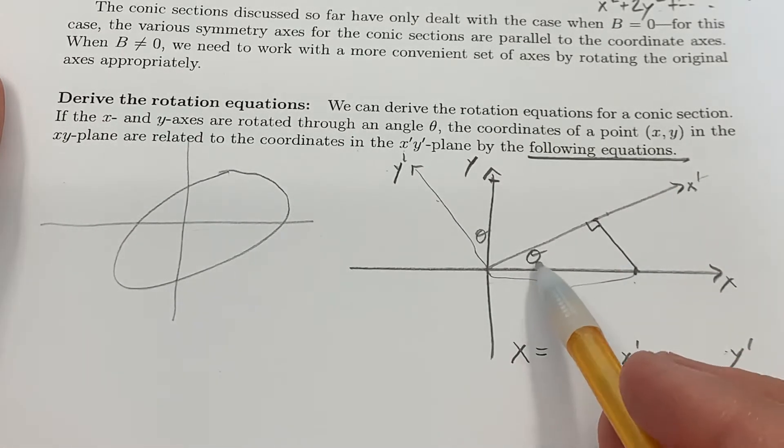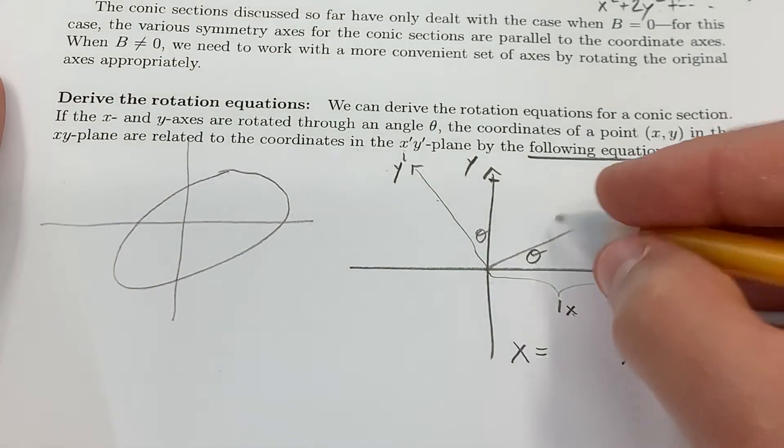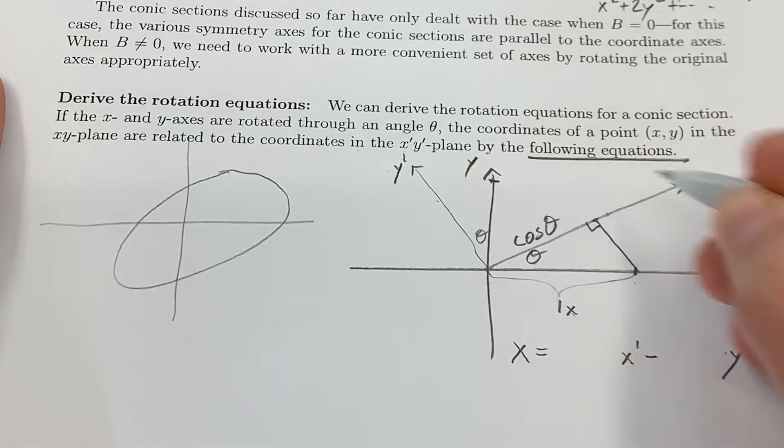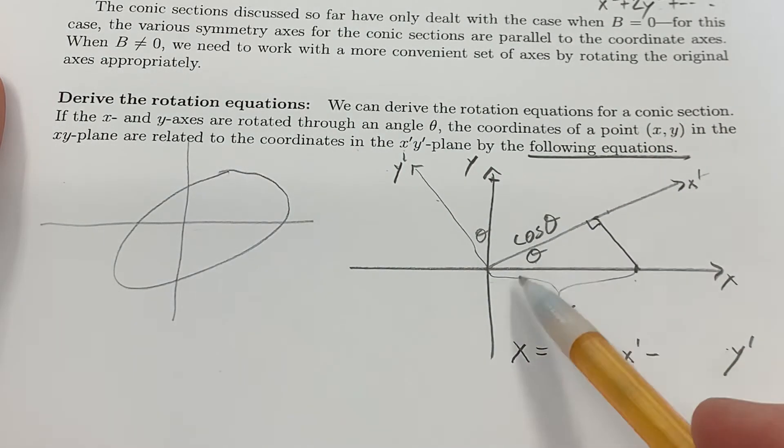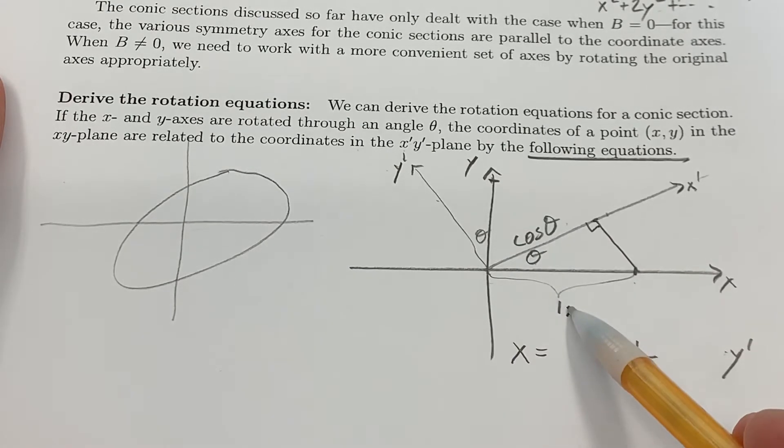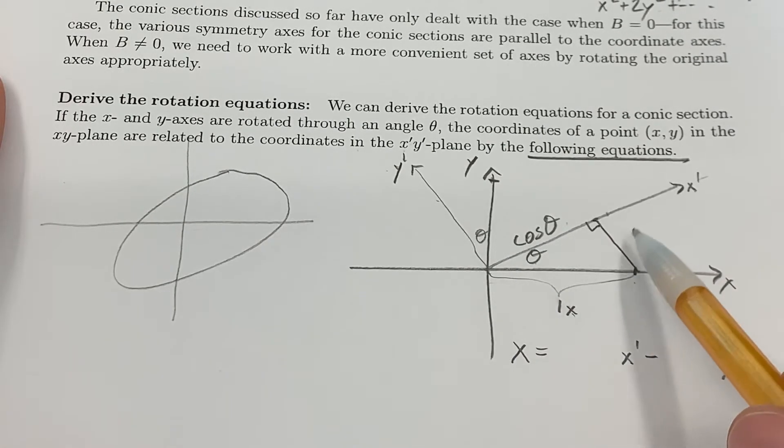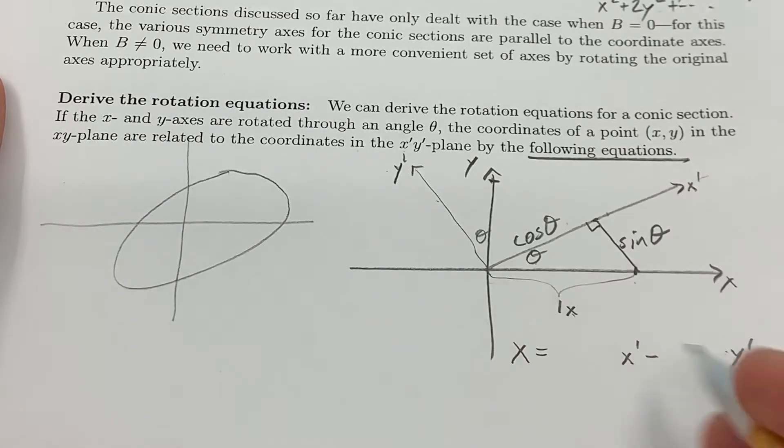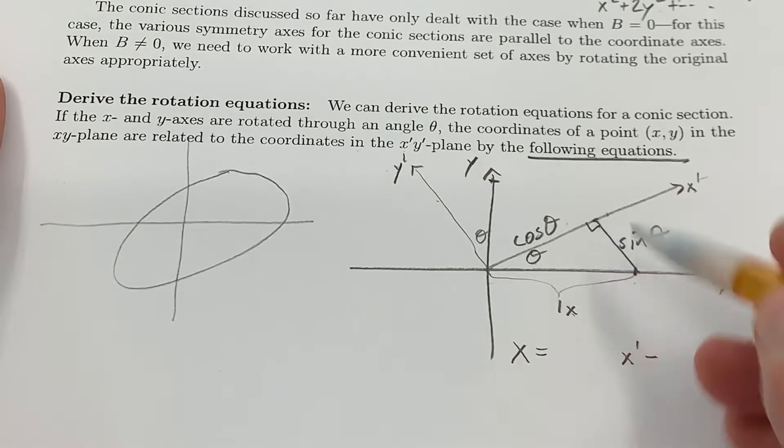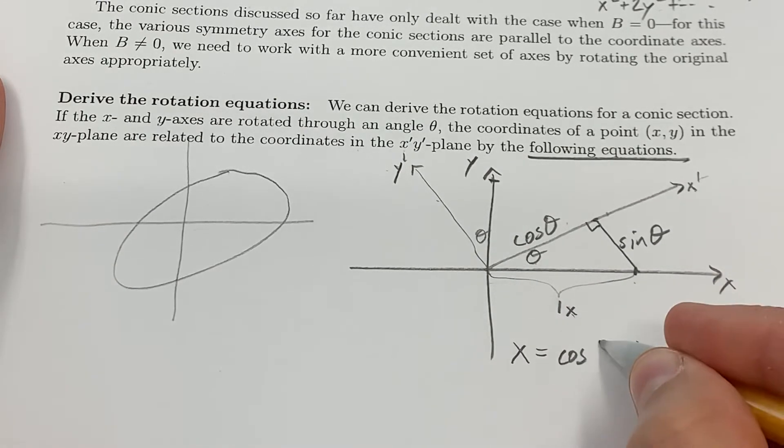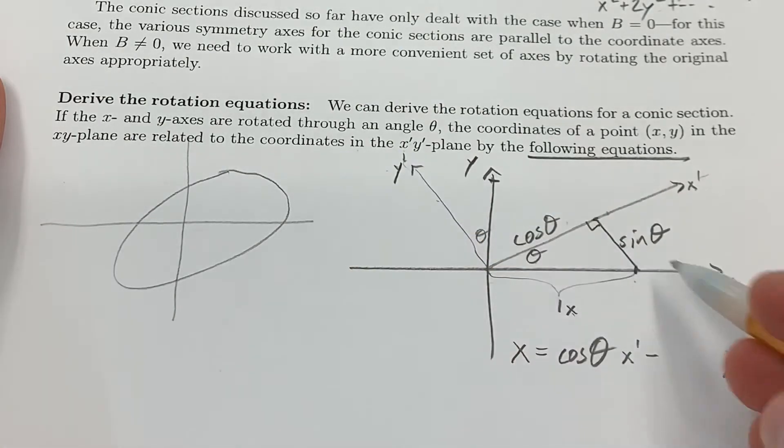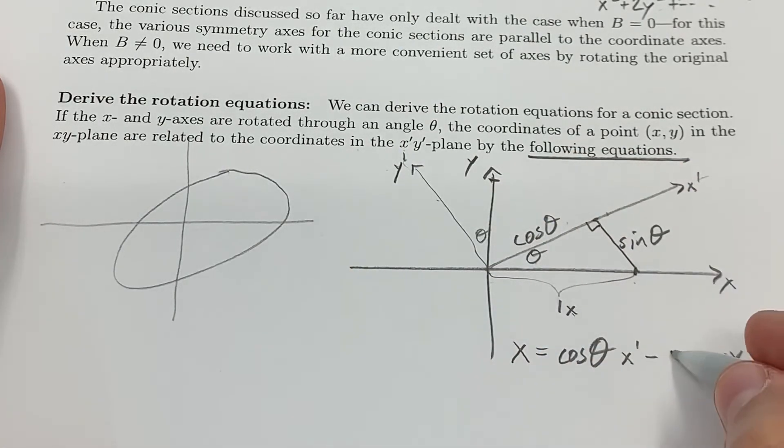Well, think about this. You have a right triangle with an angle θ and a hypotenuse of 1. That makes the adjacent side exactly cos θ. Cosine θ equals adjacent over hypotenuse. And the opposite side is exactly sin θ. That means how far do I go in the x′ direction? I go cos θ. How far do I go in the y′ direction? Well, I go the opposite direction, a distance of sin θ.